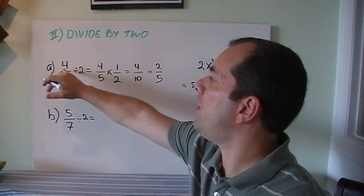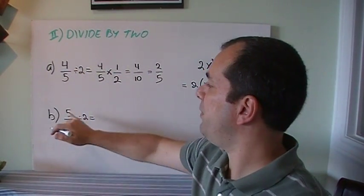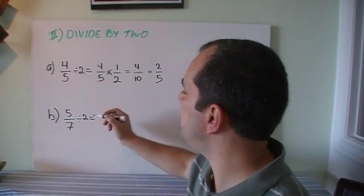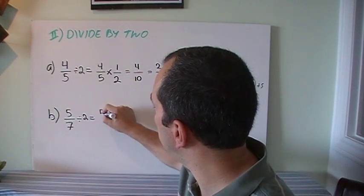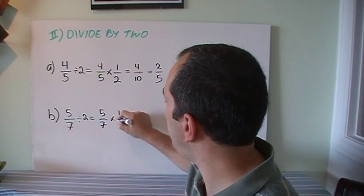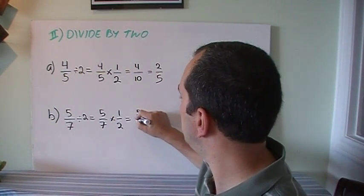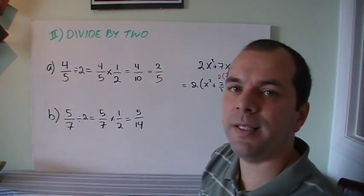So when the top number is even, you just divide it by 2. But if the top number is not even, then I just do have to do this part. So 5/7 divided by 2 is like 5/7 multiplied by 1/2, which is equal to 5/14. And there's nothing to simplify in this case.